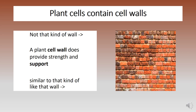The next two structures are specific to plants — animals do not have them. The first is a cell wall. A plant cell wall gives support and makes the plant strong, just like the walls in our homes.